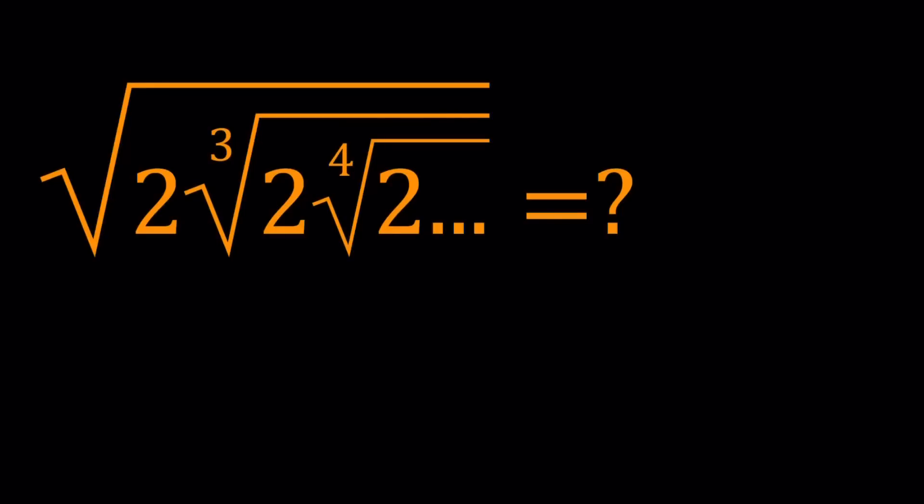Hello everyone. In this video we're going to be evaluating a very special infinite radical: the square root of 2 times the cube root of 2 times the 4th root of 2, so on and so forth. We're going to evaluate this expression numerically. This is an expression that converges, and the result will be a little surprising.